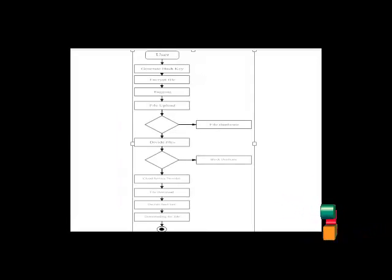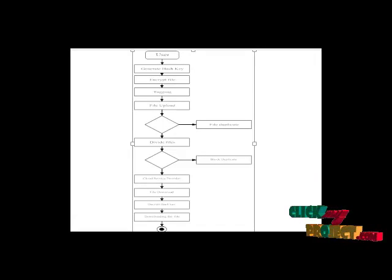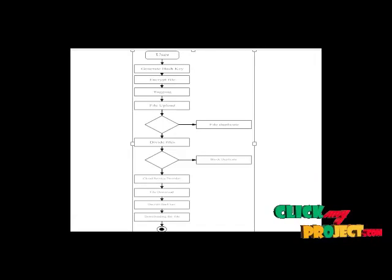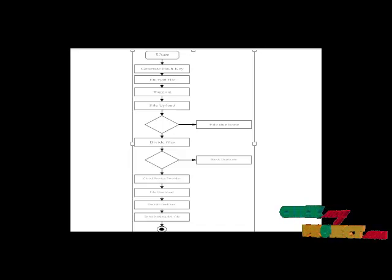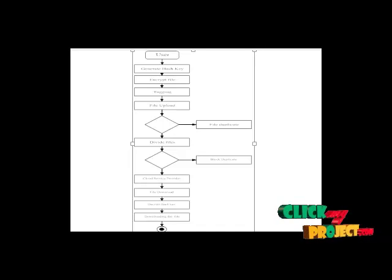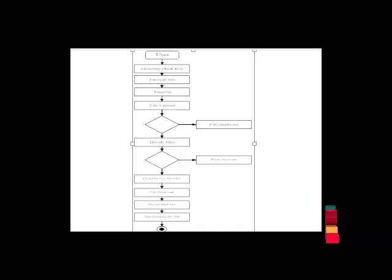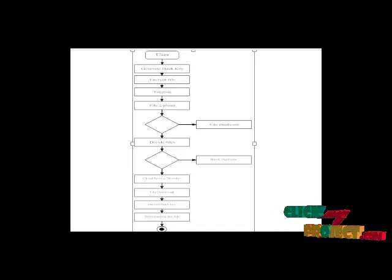In the second level of authentication, the user will enter their email ID, which will produce a hash key. The user will select a file to store in the cloud, and that file will be stored in encrypted form with a tag produced.